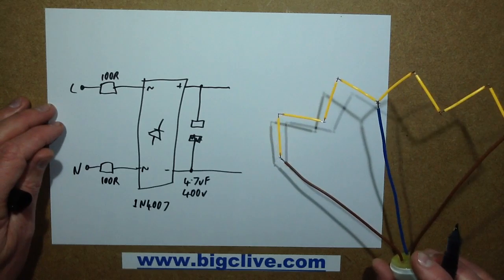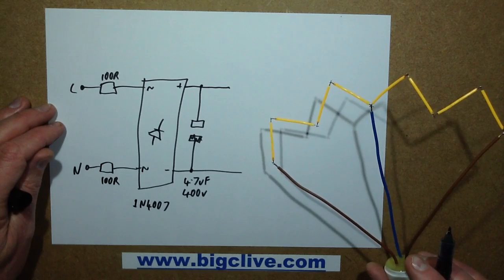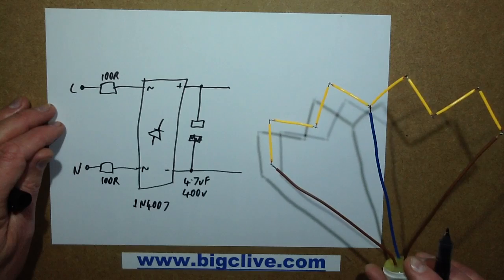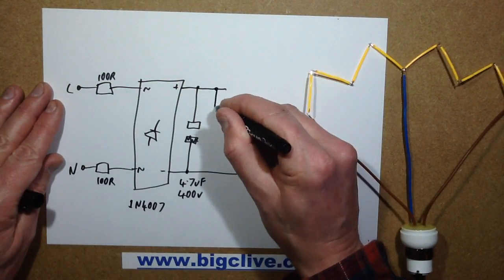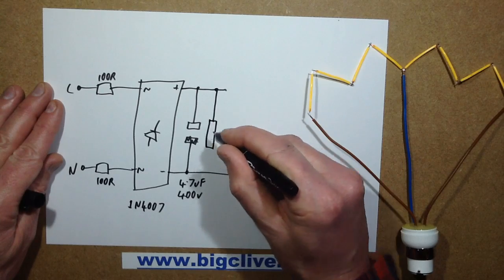It's something like 2mA through the LEDs. It's really quite low. So there's a discharge resistor across there to stop any nasty surprises. It's 1M.